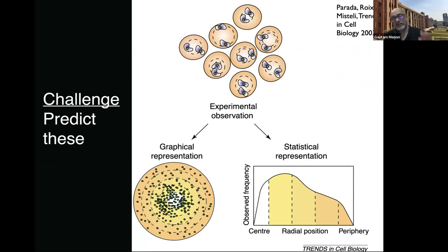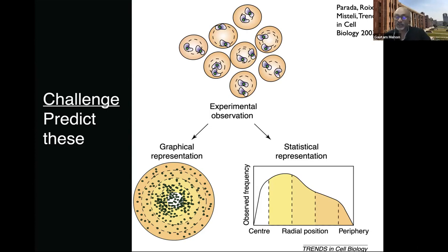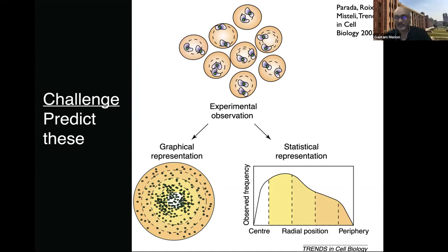Here's the challenge: imagine I give you many cells of the same type, locate chromosome 21 in all of them, find the center of mass of each copy, and represent it graphically in a scatter plot or as observed frequency as a function of radial distance from the center of the nucleus. Given any regularity in that distribution, I should be able to see it in a statistical representation, and there should be an explanation. The challenge is: predict this, do the experiment, extract the statistical representation, and use the theory to predict what it ought to be.